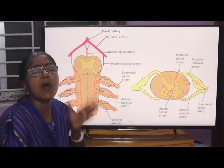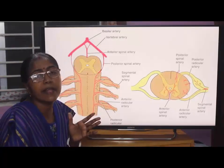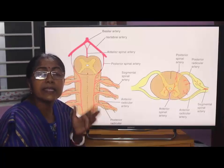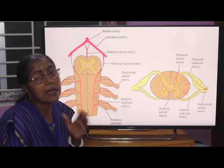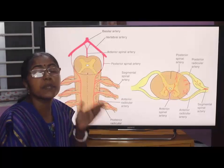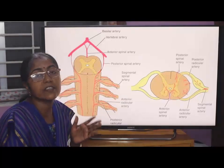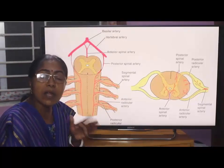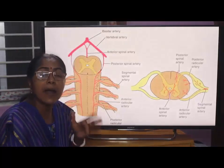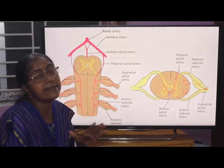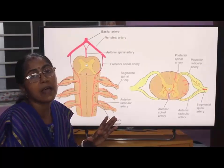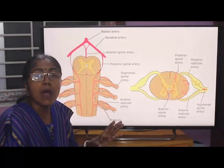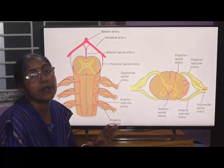Among them, one important feeder artery is the great anterior medullary artery, also known as the artery of Adamkiewicz. This artery arises from the aorta in the lower thoracic or upper lumbar region, and it supplies the lower two-thirds of the spinal cord.